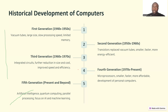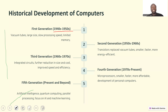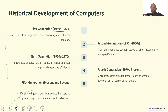Now let's look at the historical development of computers. We will examine five generations. The first generation, from 1940 to the 1950s, was characterized by vacuum tubes — very large tubes used for processing data. One computer could fill an entire room. They were large in size, very slow in processing speed, and had limited memory.